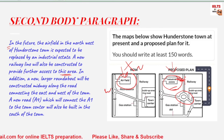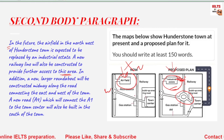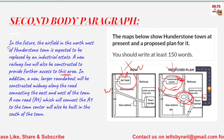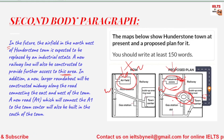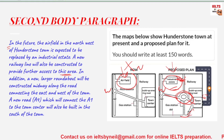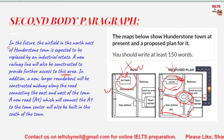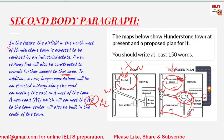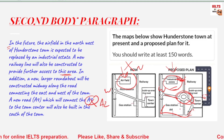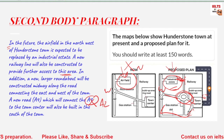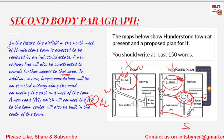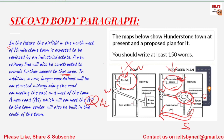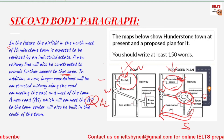The new larger roundabout will be constructed midway along the road connecting the east and west of the town. A new road, A4, will also be built — this is the A4 road here — which will connect the A2 to the town center and will be built in the south of the town. So in the south of the town, the A4 road is built, connecting the A2 and the town center. There is one more major change that has been left for you to identify.